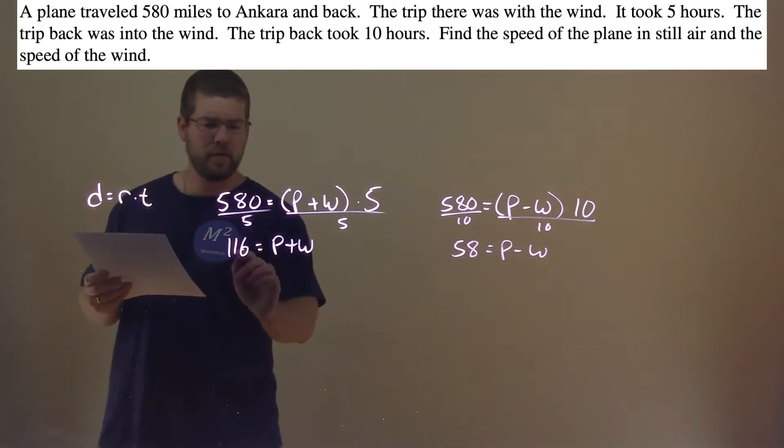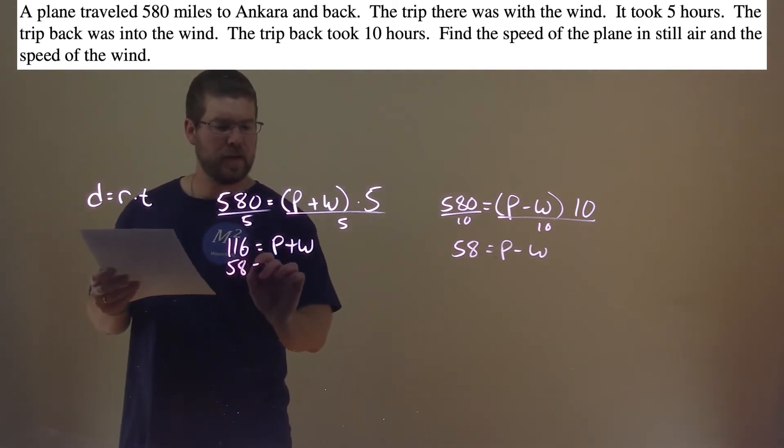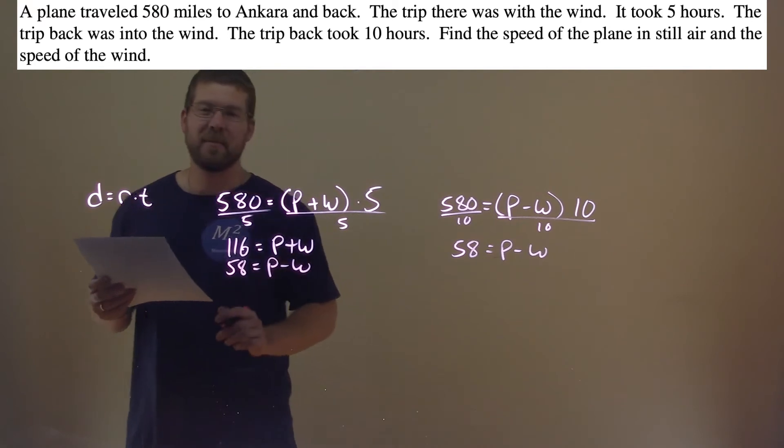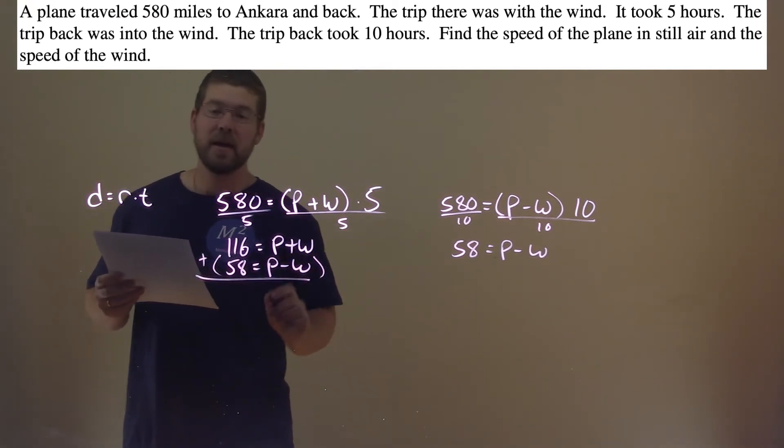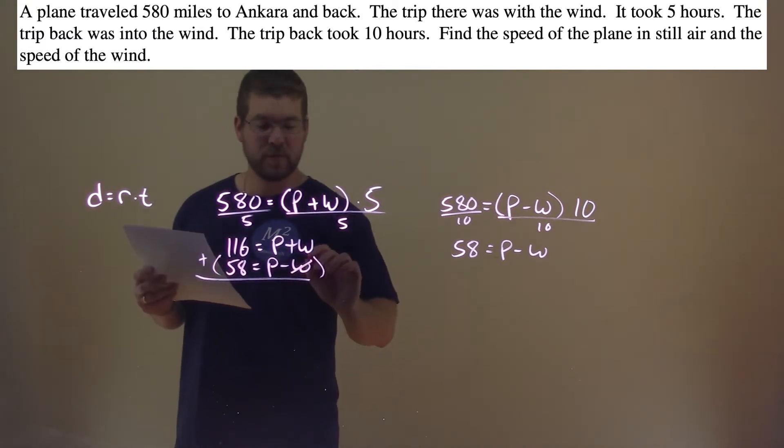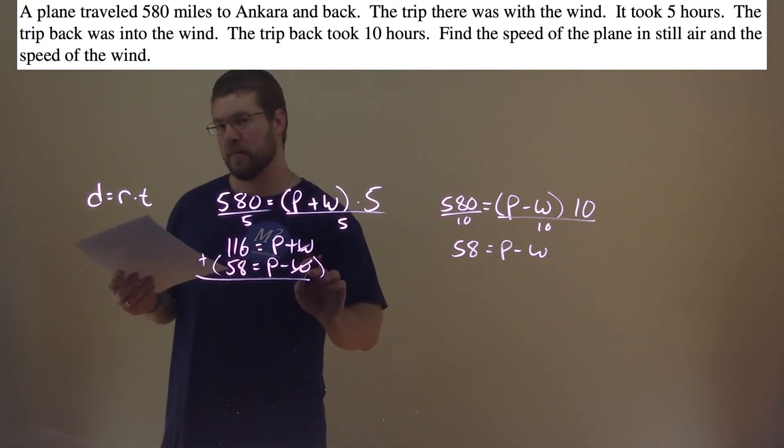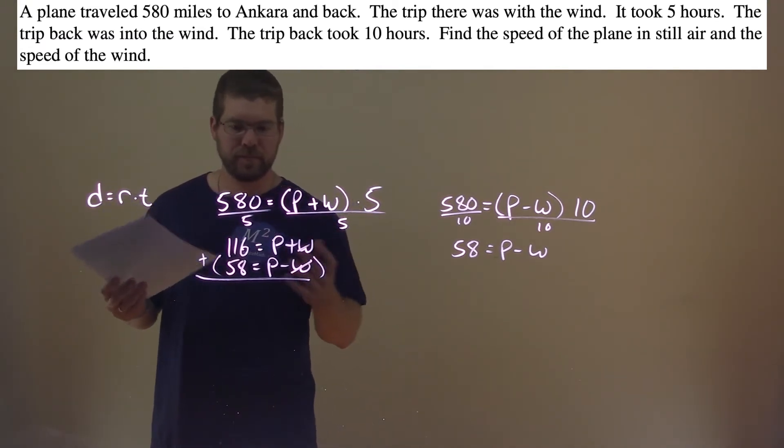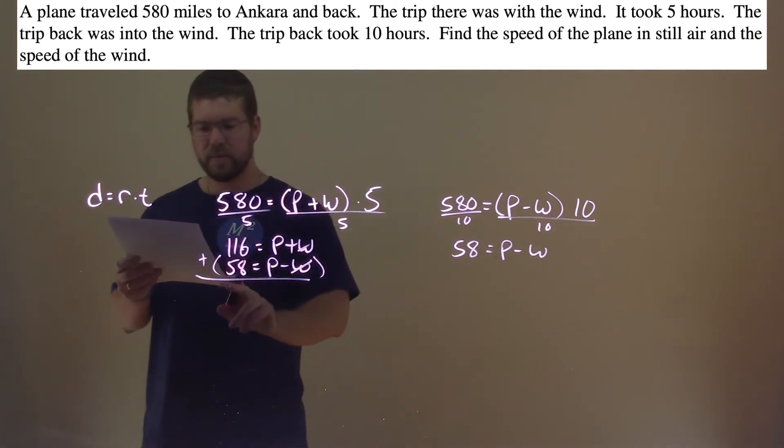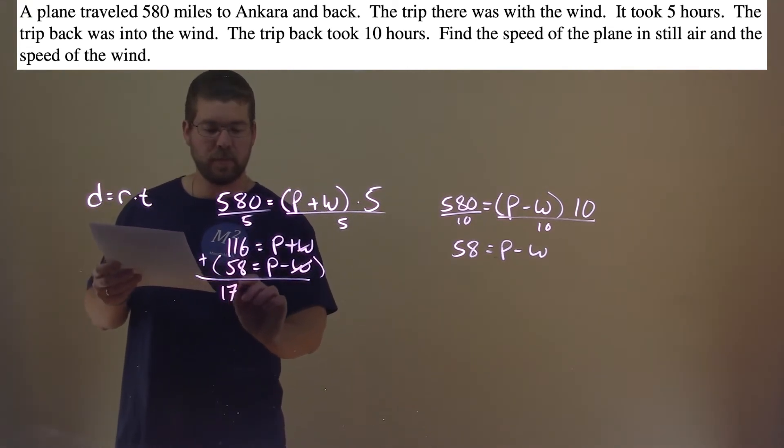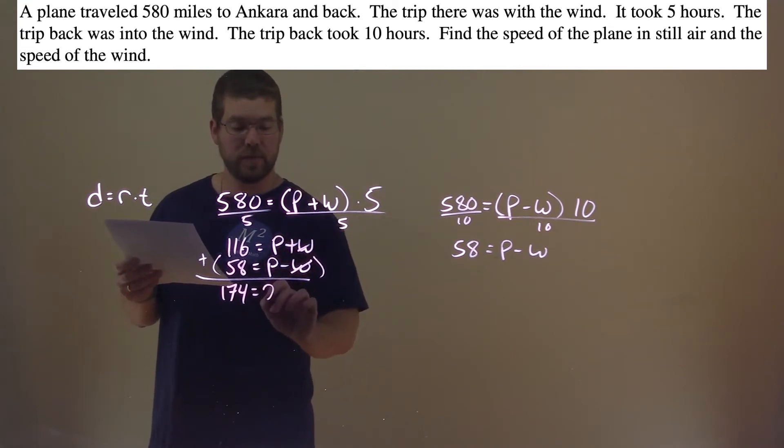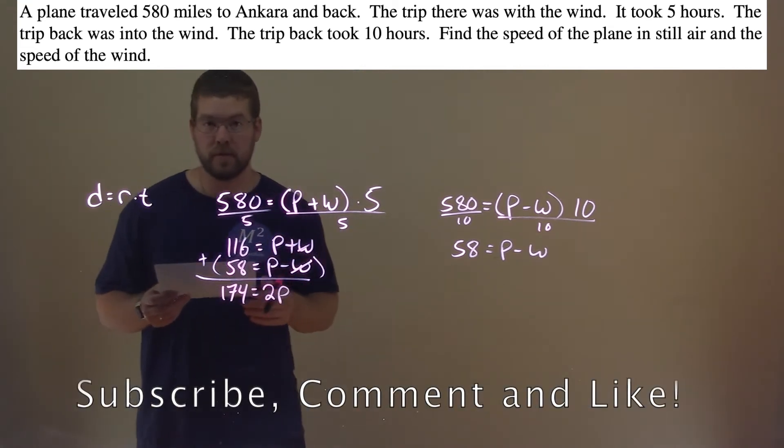So I'm going to put them over each other, 58 equals P minus W, and I'm going to solve this actually by elimination. I'm going to add these two equations, and in doing so, the variable W is going to cancel. W minus plus W or plus and minus W is just 0. And again, the W's cancel.